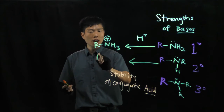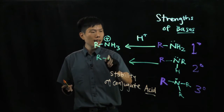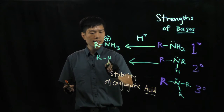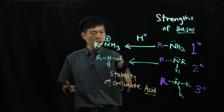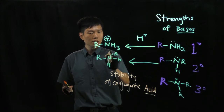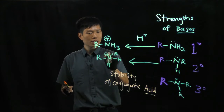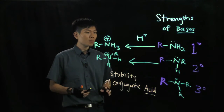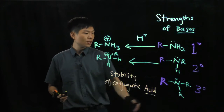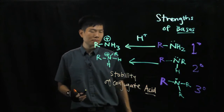You do likewise for the secondary amine — you have R, N, H, H, and R, with a positive charge on the nitrogen. And it will be similar for the tertiary amine.